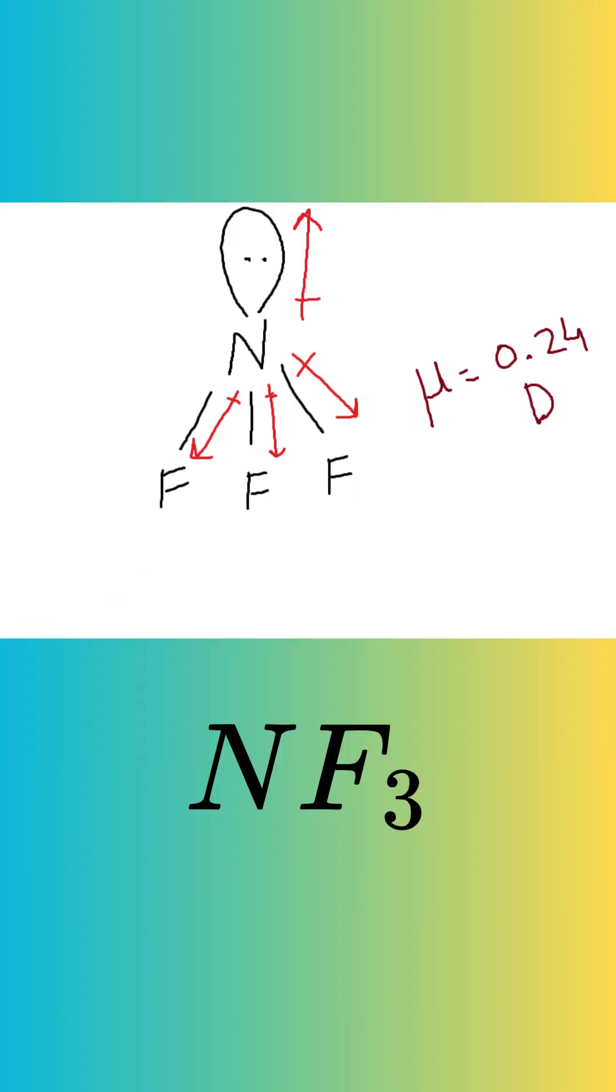Therefore, the bond dipoles for the NF bonds point towards the fluorine atoms. The lone pair on the nitrogen still points away from the nitrogen atom. Crucially, the NF bond dipoles are pointing in the opposite direction to the lone pair dipole. This causes them to largely cancel each other out, leading to a much smaller net dipole moment.